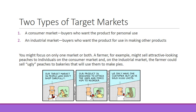When we talk about target markets, there are two types. The consumer market — that's you and me, going to the store and buying a product for personal use. Then we have the industrial market — buyers who want the product for use in making other products. For example, if you manufacture tires, you need rubber, lug nuts, screws, and hubcaps — all purchased on the industrial market — which allows you to make your product and then sell it to consumers.